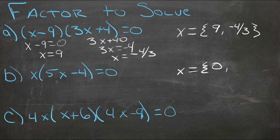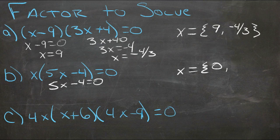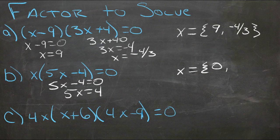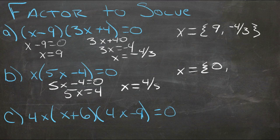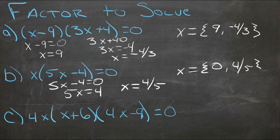The other solution is what happens when we get 5x minus 4 equal to zero. So we add 4 to both sides, and we get 5x equals 4. Divide both sides by 5, and we get x equals 4 fifths. So the other solution is 4 fifths.